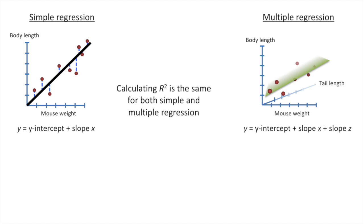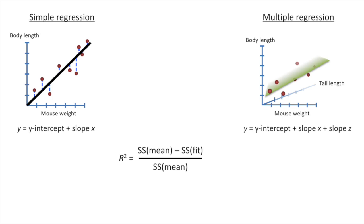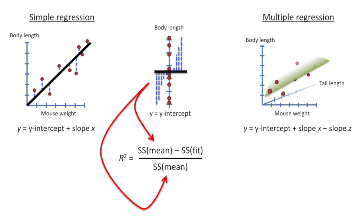So from the StatQuest on linear regression, you may remember the first thing we did was calculate r-squared. Well, the good news is calculating r-squared is the exact same for both simple regression and multiple regression. There's absolutely no difference. Here's the equation for r-squared, and we plug in the values for the sums of squares around the fit, and then we plug in the sums of squares around the mean value for the body length. Regardless of how much additional data we add to our fancy equation, if we're using it to predict body length, then we use the sums of squares around the body length.